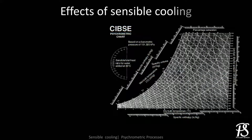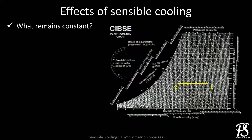Now let us understand the effect of sensible cooling on different psychrometric properties, where the process is represented by 1 to 2. The psychrometric properties that remain constant during sensible cooling are: first, specific humidity — since there is no addition or rejection of moisture, the value of specific humidity remains constant. The same is the case with dew point temperature.